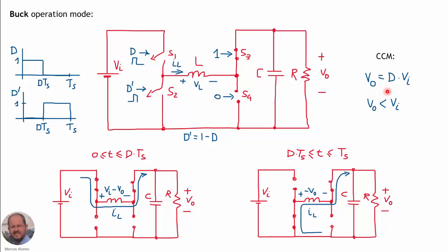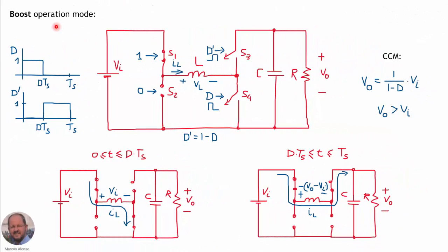The output voltage equals the duty cycle D times the input voltage, and the output voltage is always lower than the input voltage.